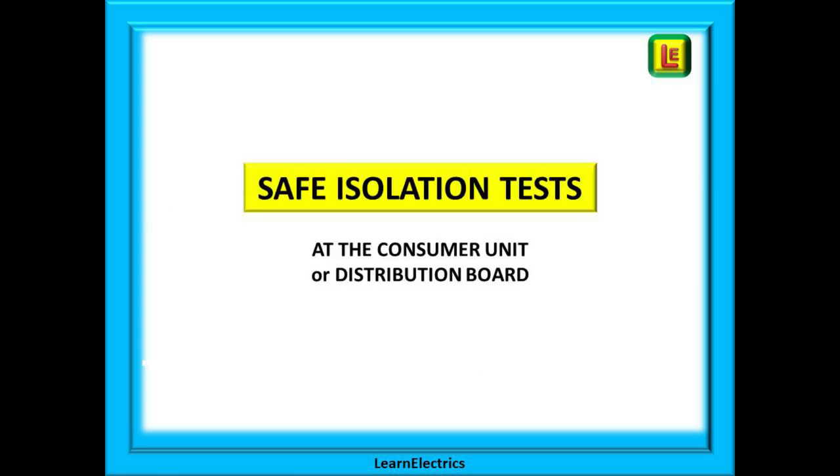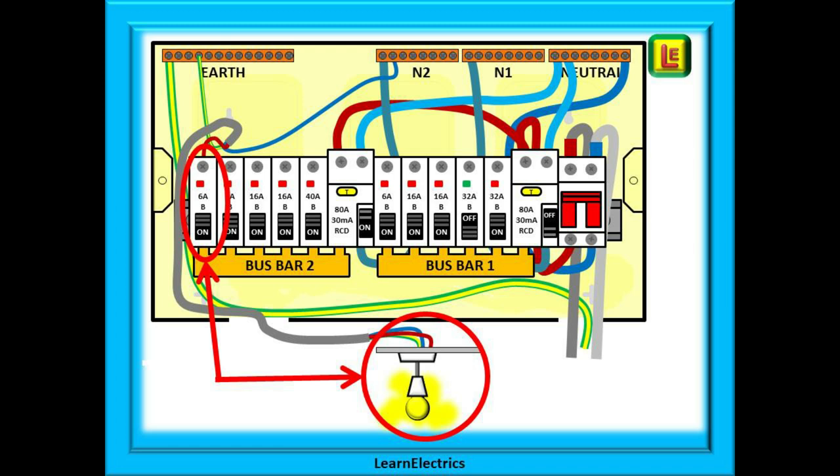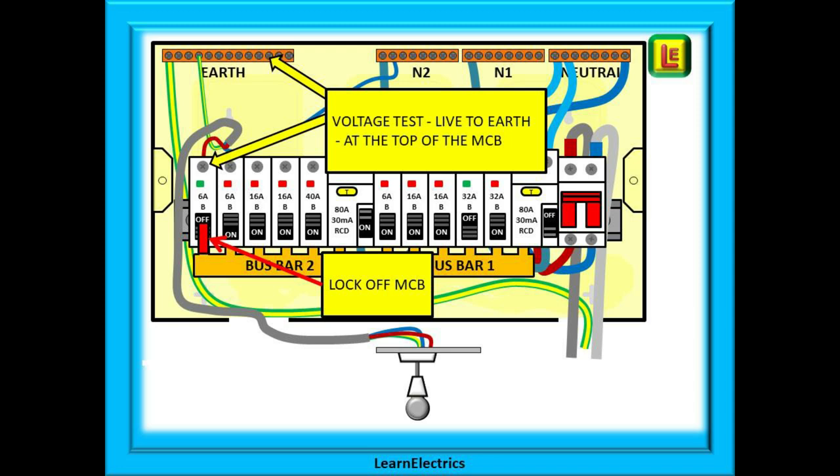We can look first at safe isolation at the consumer unit by isolating the circuit breaker for a circuit. Here we are about to safely isolate the 6 amp breaker on the left side of the consumer unit. With the MCB on and the light switch on, the lamp should be lit. Now turn the circuit breaker, the MCB off. The lamp should go off. If it does, we have chosen the correct circuit breaker. Now lock off the MCB. Attach a label so that others know who has locked it off and carry out a voltage test between the load side, the output side of the MCB and the earth bar.